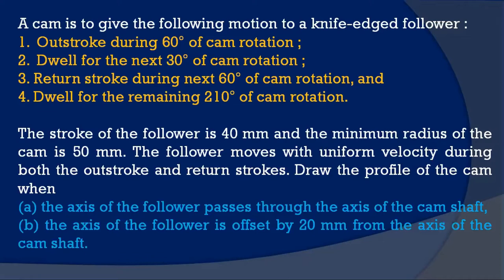A cam is to give the following motion to a knife-edge follower: outstroke during 60 degrees of cam rotation, dwell for the next 30 degrees, return stroke during the next 60 degrees, and dwell for the remaining 210 degrees — totaling 360 degrees. The stroke of the follower is 40 millimeters, the minimum radius of cam is 50 millimeters, and the follower moves with uniform velocity during both outstroke and return strokes.